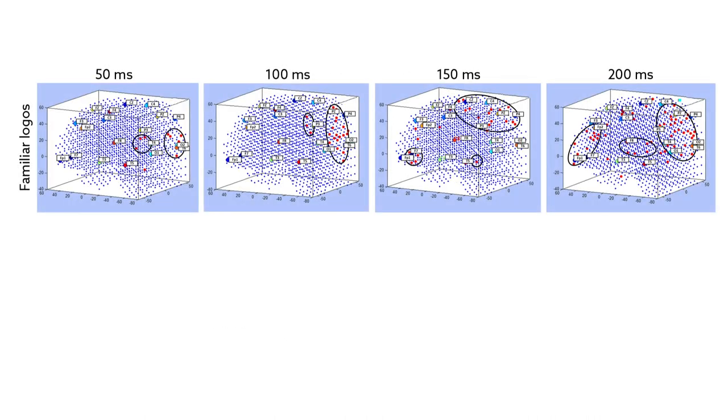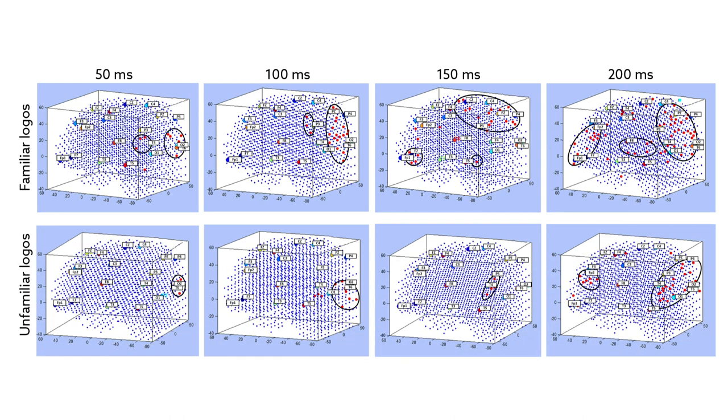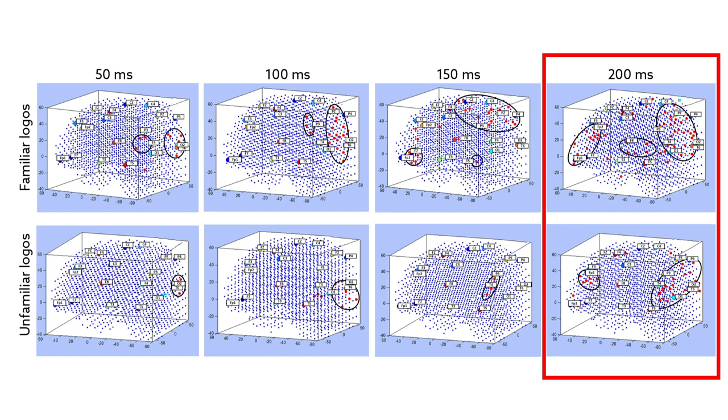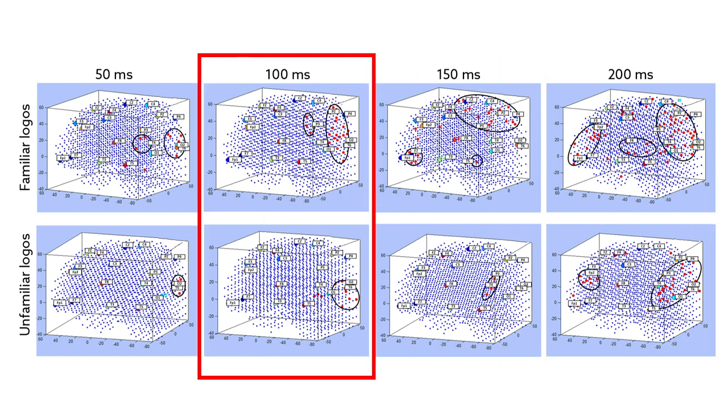The model showed that familiar logos elicited more widespread brain responses than unfamiliar logos. The differences were most prominent around 200 milliseconds, but variations in brain activity could be picked up as early as 100 milliseconds after a familiar logo was shown.